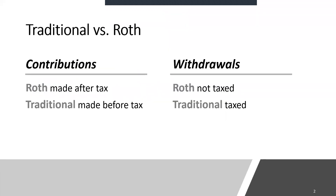The difference between traditional and Roth mostly stems around taxes. Roth contributions are made after taxes and traditional contributions are made before taxes. When those contributions are withdrawn in retirement, Roth contributions are not taxed — and the growth of that account is not taxed as well. With traditional contributions, you pay your taxes when you take those withdrawals in retirement.